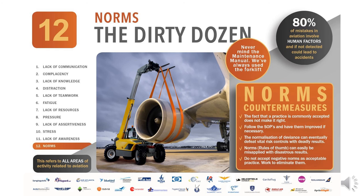Norms are the commonly accepted work practices within an organization — unwritten rules that are followed or tolerated by most organizations. When a newer employee observes a more senior member perform a task in a particular manner, they may assume that this is the way things are supposed to be done. Over time, more employees see how a task is accomplished and assume it is the correct method, and that method then becomes the norm for that organization. Instead, each employee should ensure that they are following standard operating procedures and not simply mimicking the performance of others. If I am completing a task as I witnessed another accomplish it, and they were wrong in how they got it done, then I am also wrong.